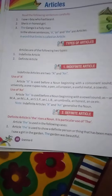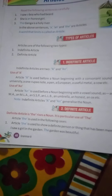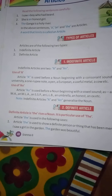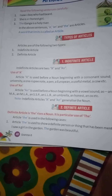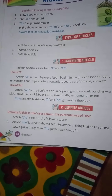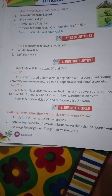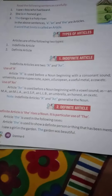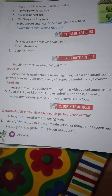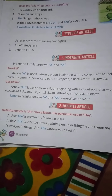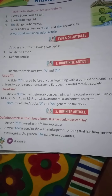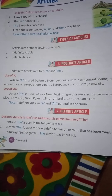So there are two types of articles: indefinite and definite articles. The indefinite articles are two: 'a' and 'an.' So let's look at the uses of 'a' and the uses of 'an.'